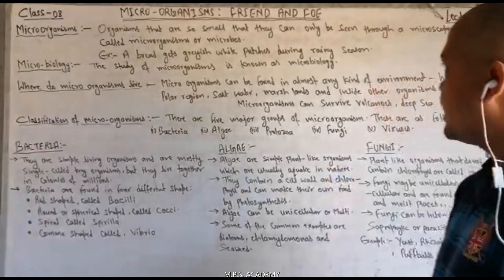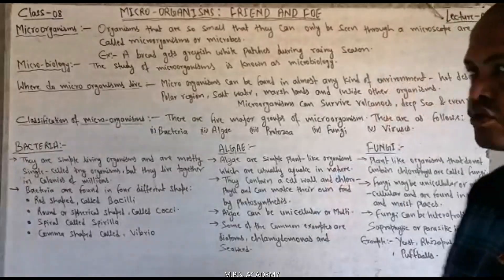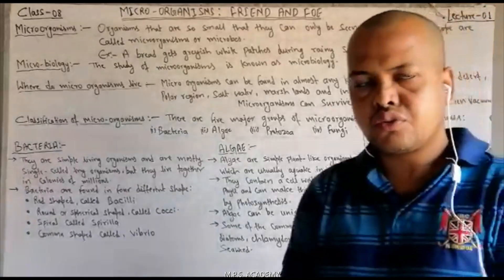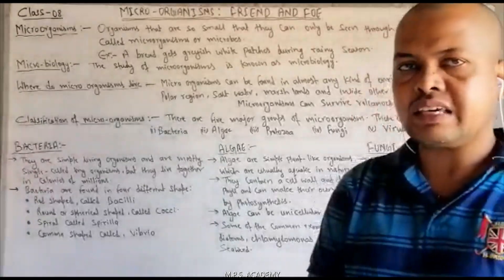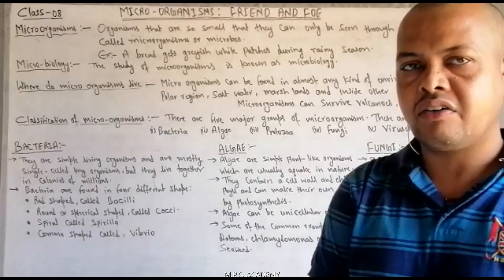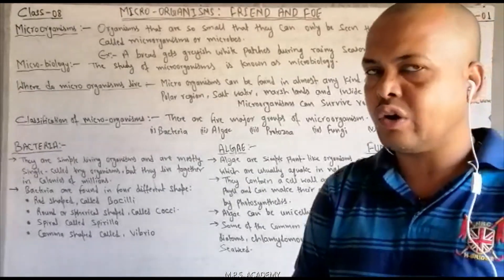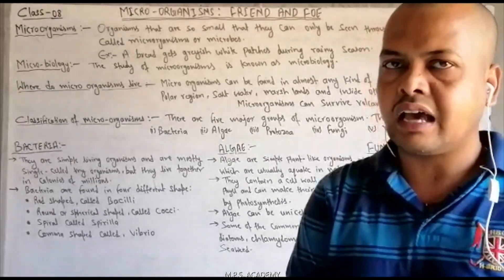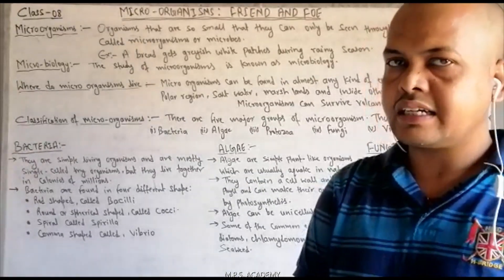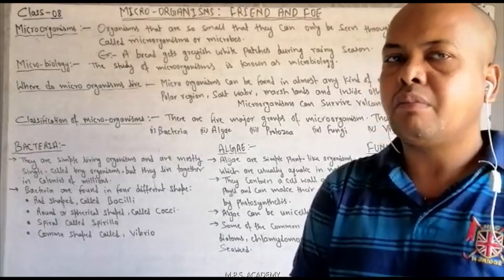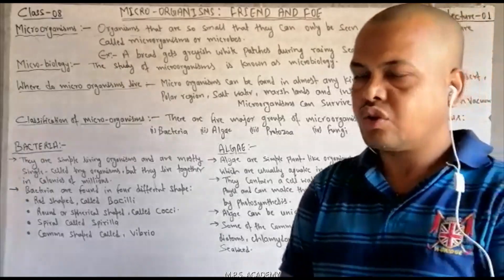Now let's talk about: what is a microscope? The instrument by which we can see very tiny objects that cannot be seen by our naked eyes is called a microscope.